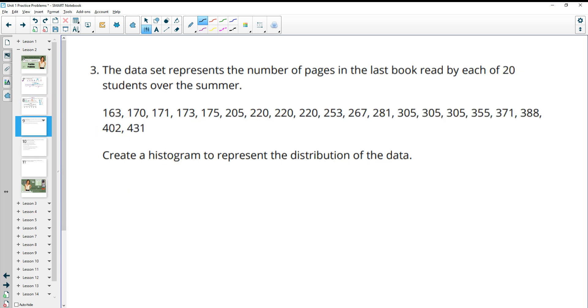Number three, we have a data set that represents the number of pages in the last book read by each of 20 students. So we know we have 20 data points in here, and here they are, 163 to 431. This time we're going to create a histogram, and histograms we end up grouping the data in different ranges. So you can decide kind of what you want your range to be. Here I'm going to do it, it goes from the hundreds to the 400s, so I'm going to group mine in 100 pages. Again, you could do different things. So I'm going to do everything in the 100s as a category.